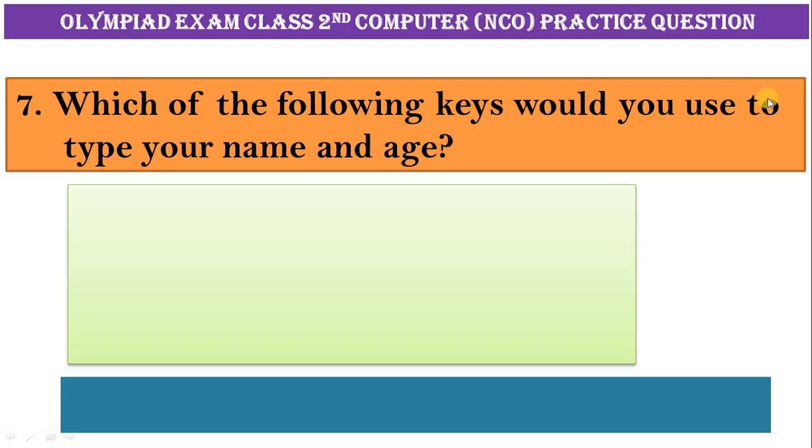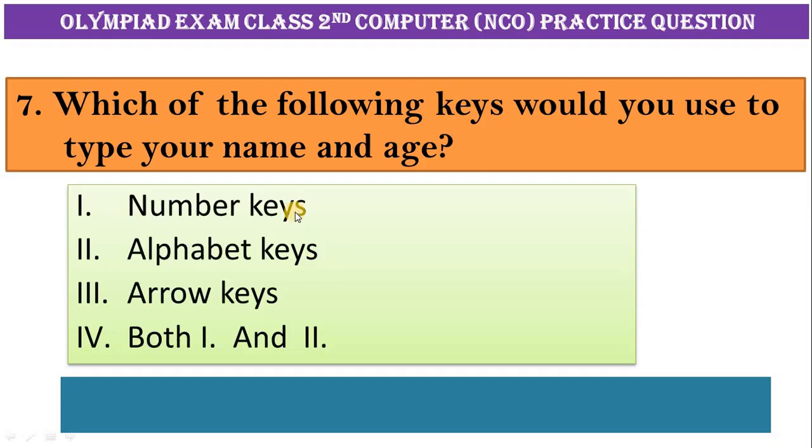Question number seven: which of the following keys would you use to type your name and age? Numbers key, alphabet keys, arrow keys, both one and two. Correct answer is both one and two, numbers key and alphabet key.